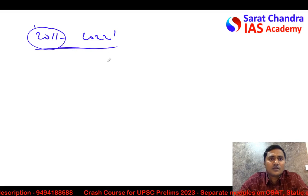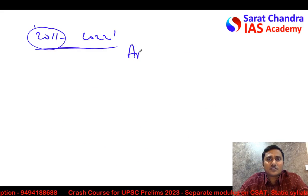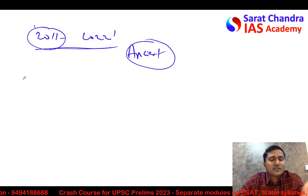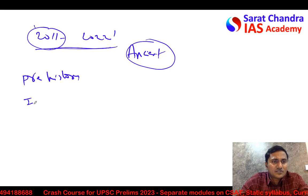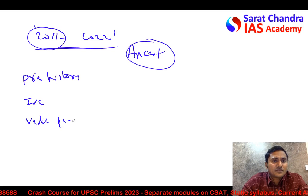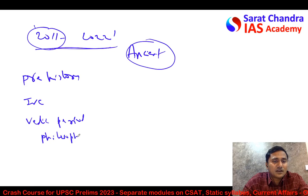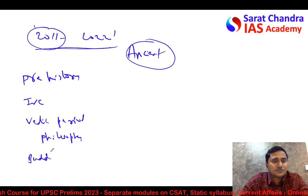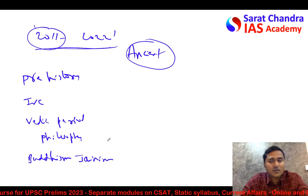In ancient history, quickly speaking: Prehistory, then Indus Valley Civilization, then the Vedic culture and period — particularly Vedic culture and philosophy. In the Vedic period, UPSC's favorite for prelims is philosophies. In 6th century BC, Buddhism and Jainism are the favorite topics of UPSC.